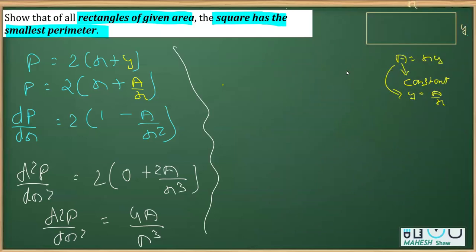Now, for maximum or minima, dP by dx should be equated with 0. And if I equate this with 0, this is 1 minus a over x square is equal to 0. Transposing 2 to the other side becomes 0, so it's 1 is equal to a over x square. So finally, x square is equal to a, or we can say x is equal to plus minus under root a. Area has to be positive, so I'm taking this a.